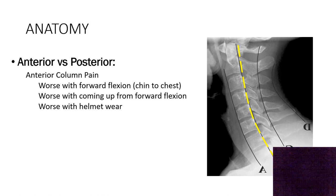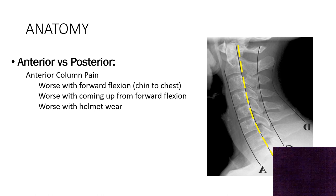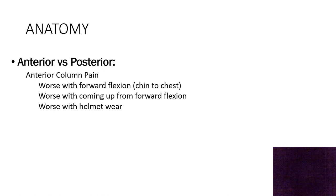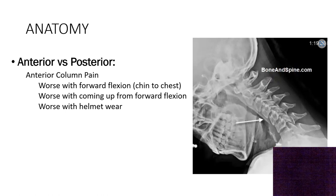Anterior column pain is pain arising from anything in front of the neuroforamen — neuro meaning nerve, foramen meaning window — and this can come from either the vertebral body itself or the discs. The pain is typically worse with forward flexion because you're increasing how much weight is experienced on the anterior column. It can be worse with anything that adds weight — for example, wearing a helmet places 75% of that load on the anterior column. Typically, looking down at a screen like your cell phone or a laptop loads the front of the spine. As you lean forward, you reverse the curve of your neck and really load the front part of the spine.